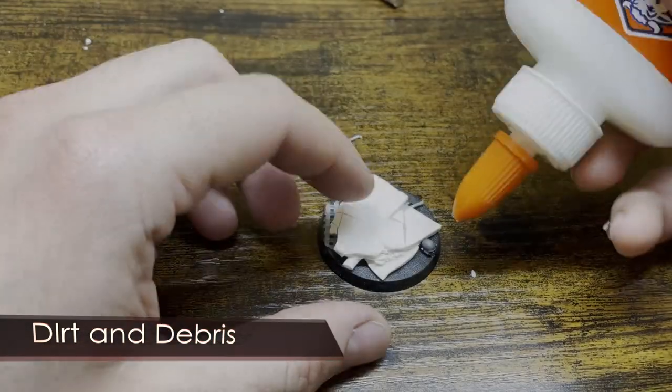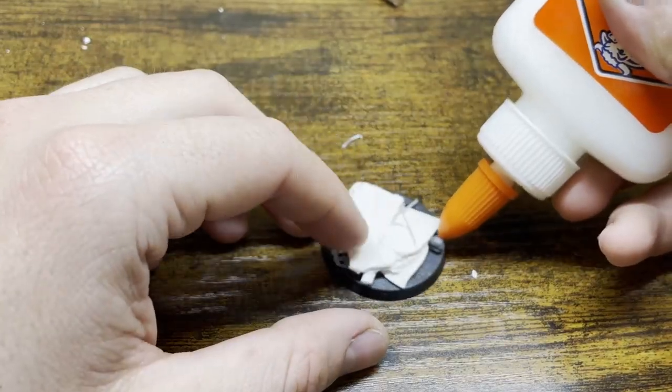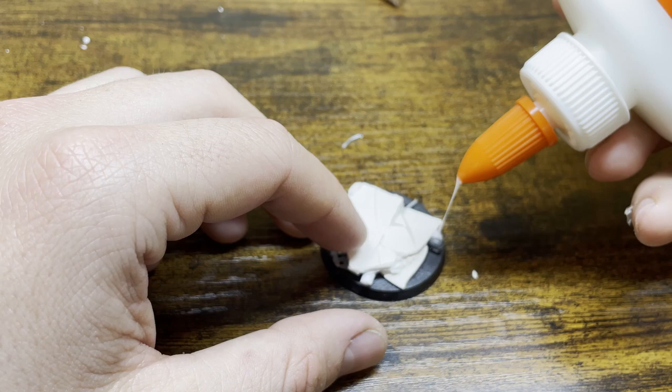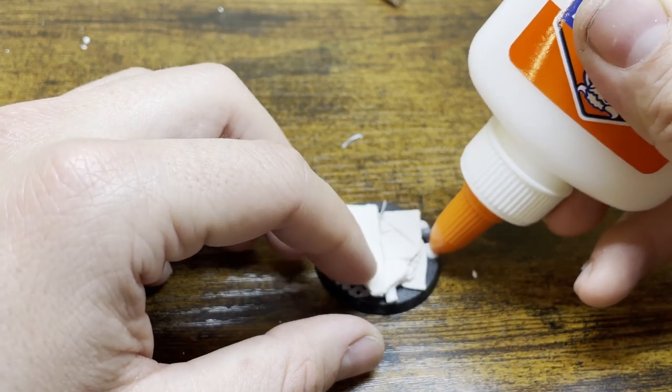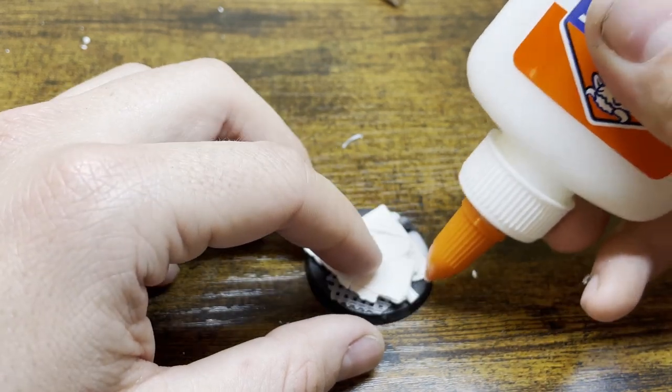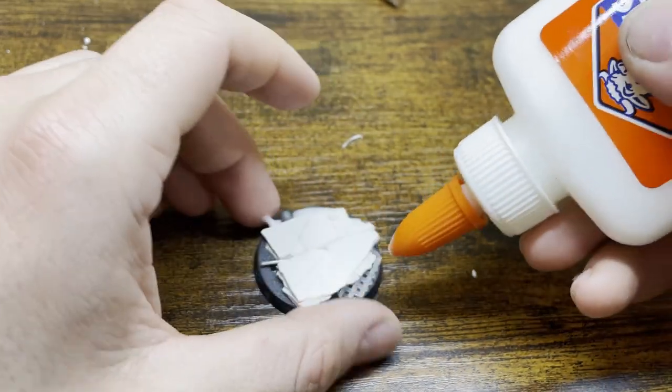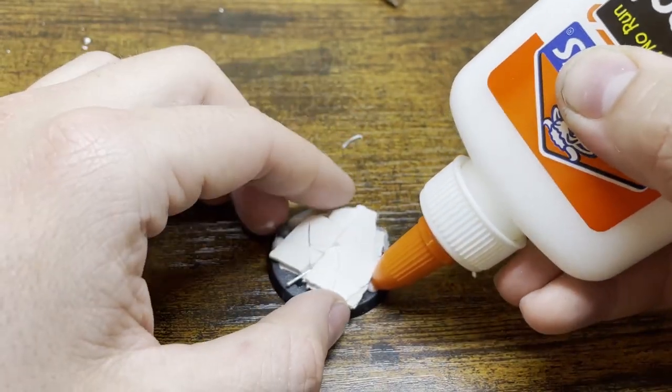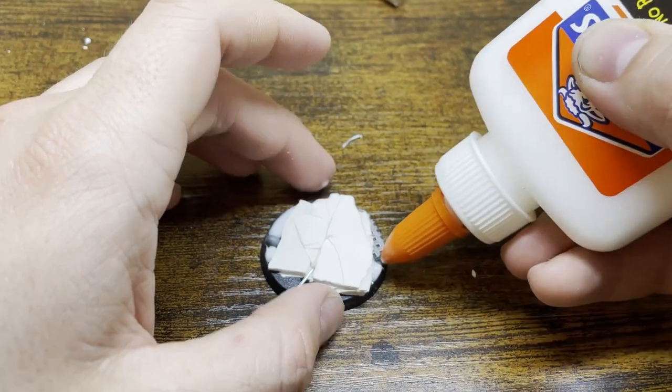On to the last step before we get to painting is adding some dirt and debris. What you're going to want to do is get your white glue and add a liberal amount to any parts of the base that are still showing. Don't worry about getting this on other parts of the base. It is a rubble base, so debris getting everywhere is kind of part of what we're doing.